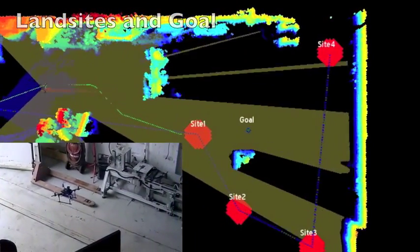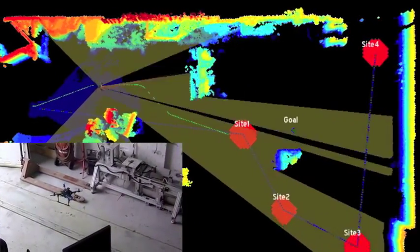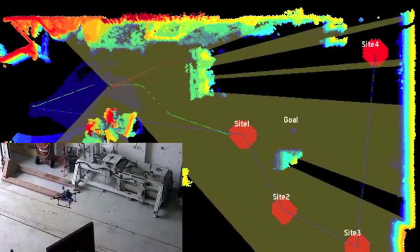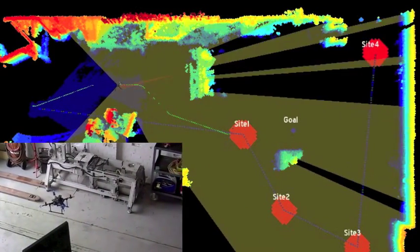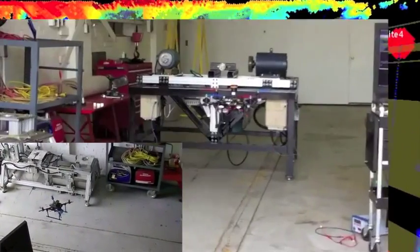It's going to do the analysis of the landing site and decide autonomously whether it's going to land there or not. Hopefully it will decide not to land there because it's a bad landing site.